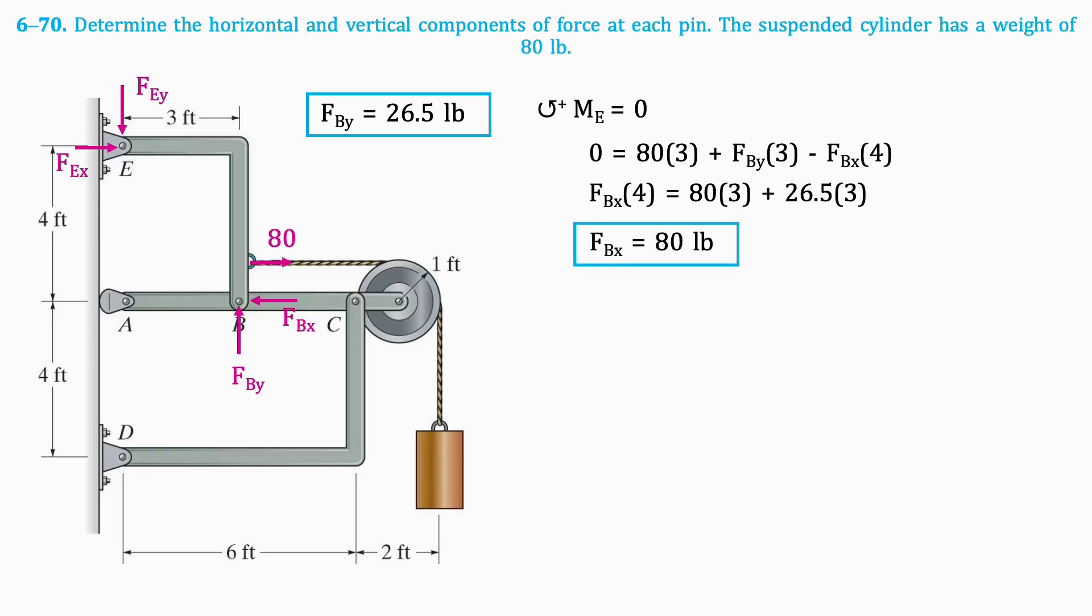Then we'll take the sum of forces in the horizontal direction. Since we now know the value of F_BX, we can isolate this equation for F_EX. The result is 0 pounds.